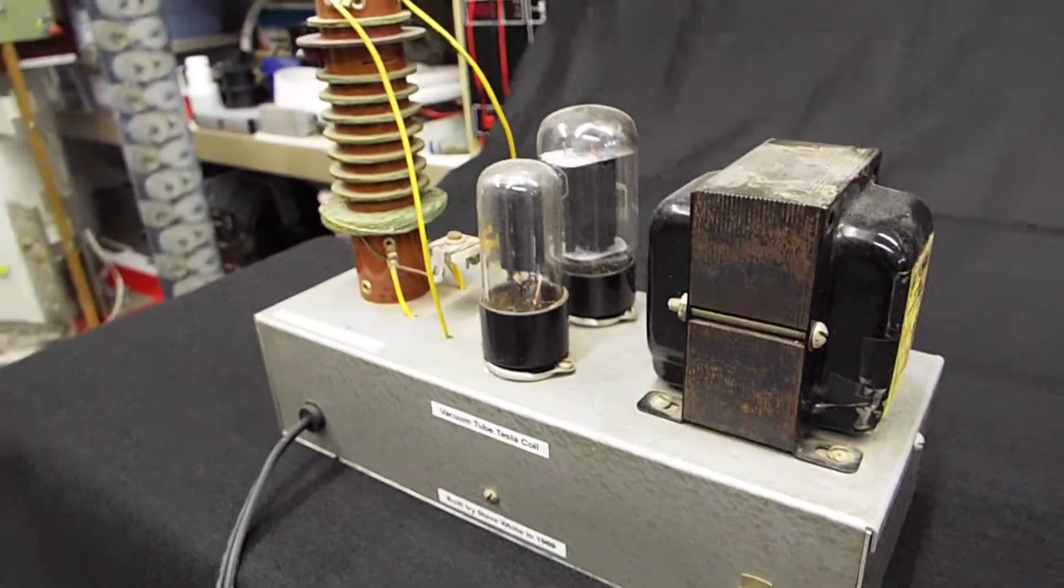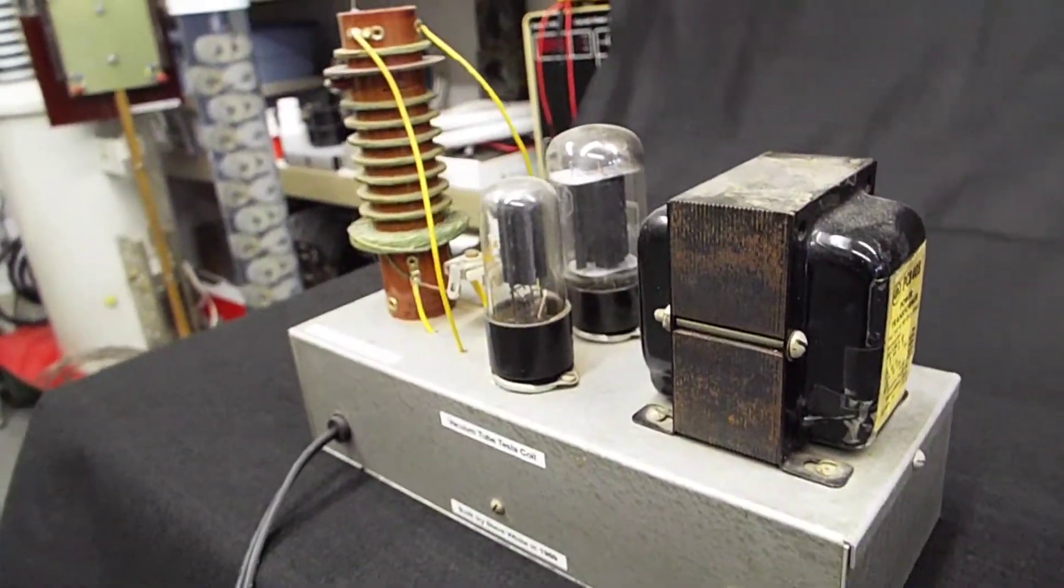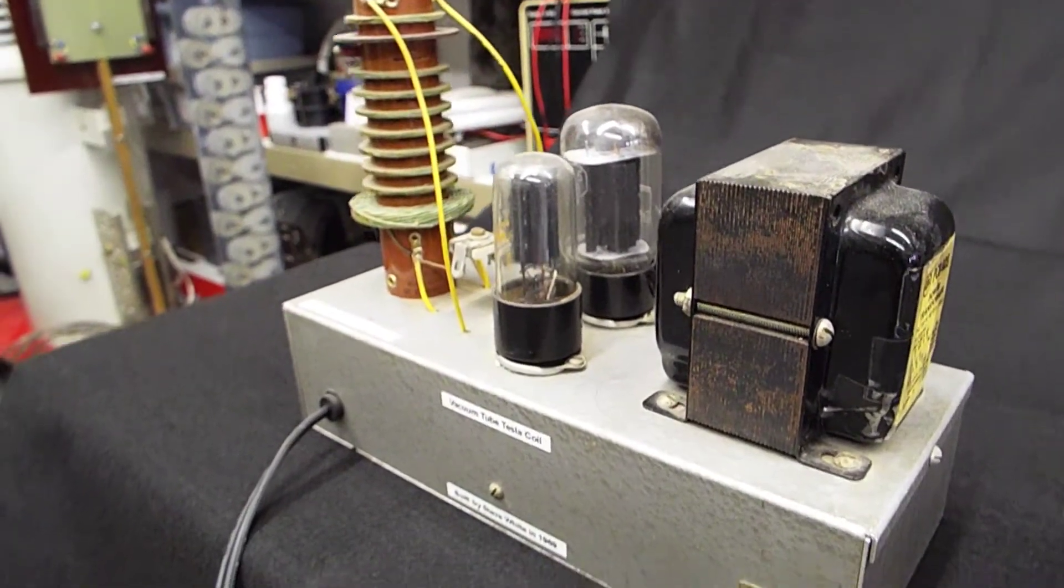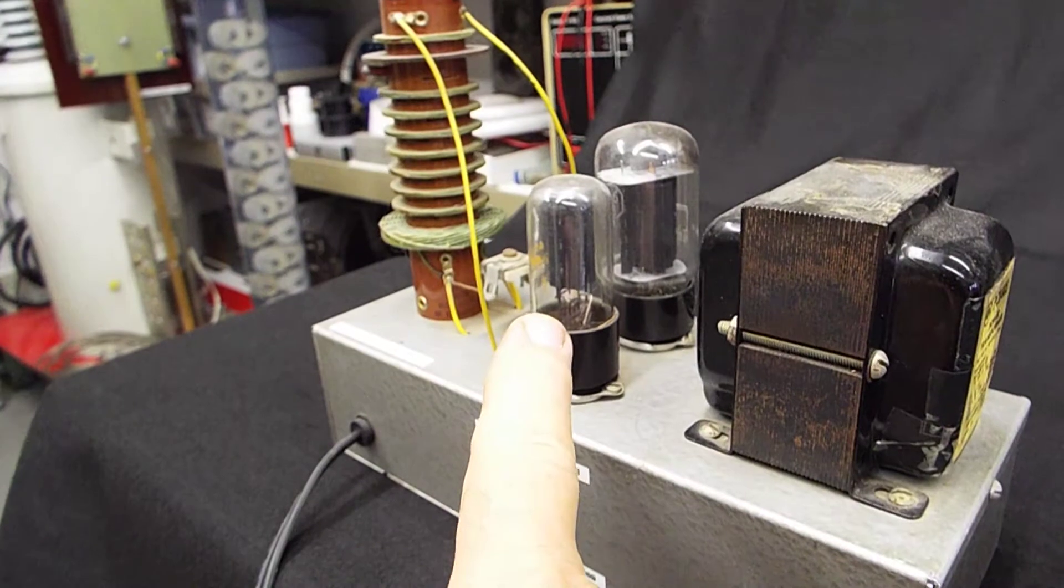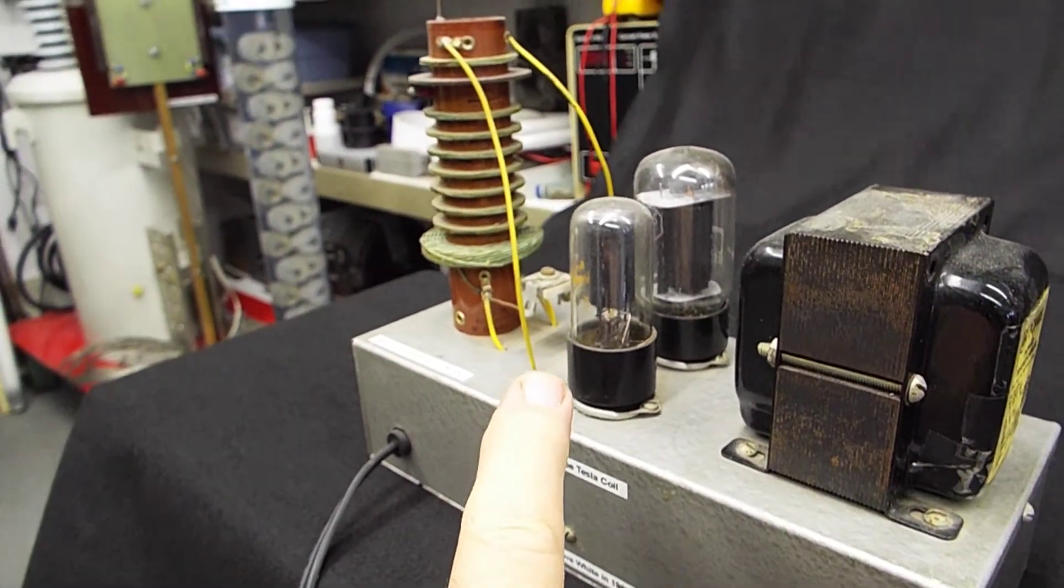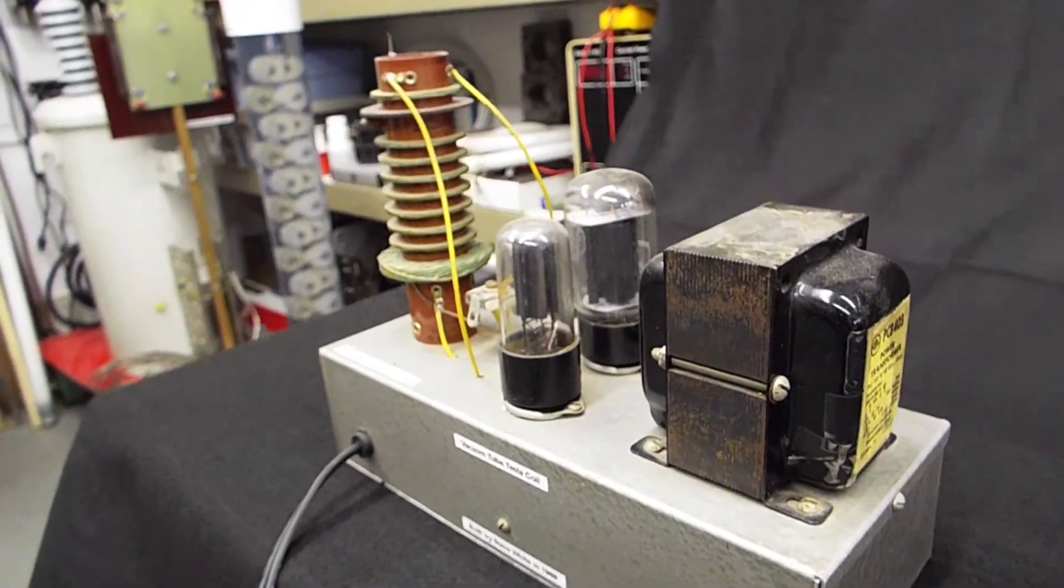And this was back before the days where high voltage diodes were commonly available. So it uses a vacuum tube diode. There's actually two diodes in there, so you can make a full wave bridge rectifier out of it.